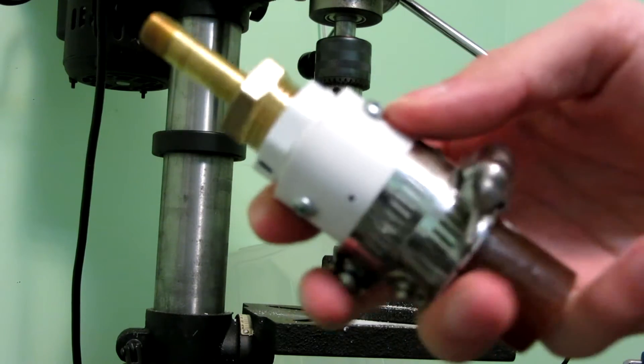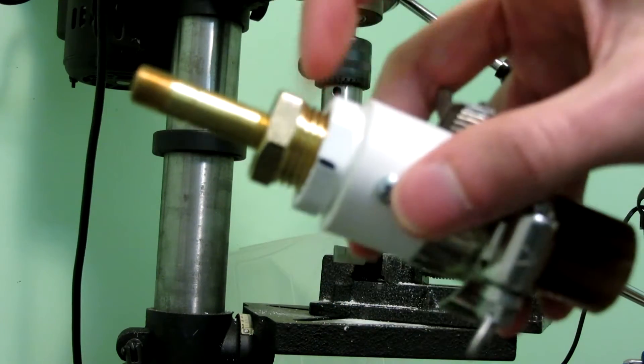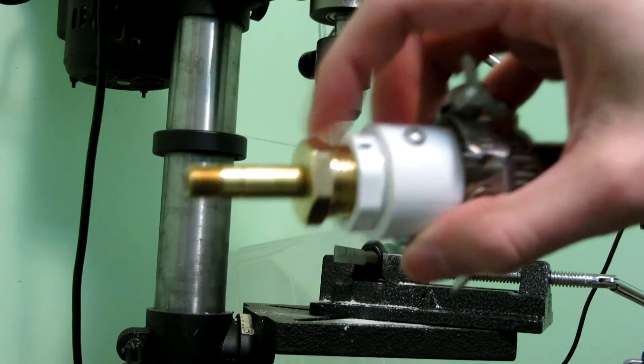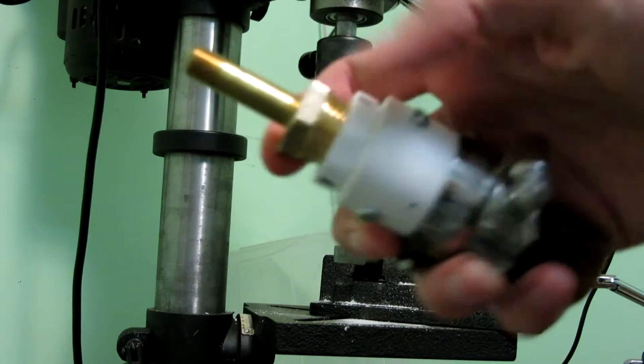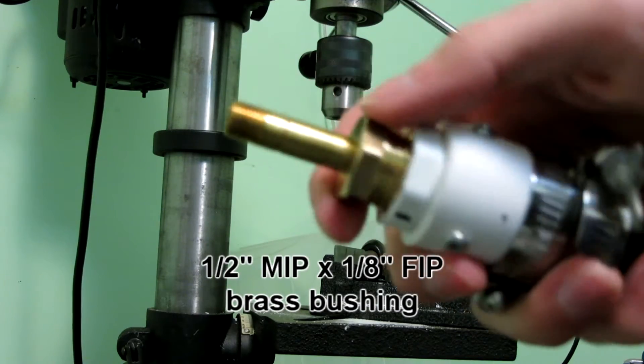The way I did those symmetrically is I lined them up with this hex that's at the top. Then into this threaded part of the bushing, I have a brass fitting. This is a brass threaded reducer bushing.